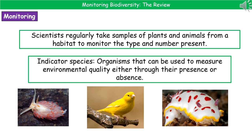One of the key types of organisms we're looking for are ones we refer to as indicator species. An indicator species is an organism that can be used to measure the environmental quality, and the way they do that is either by being present or by being absent.